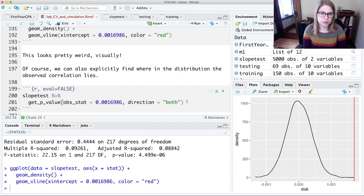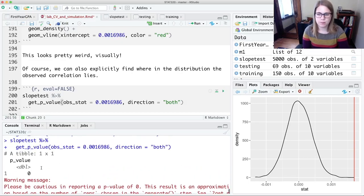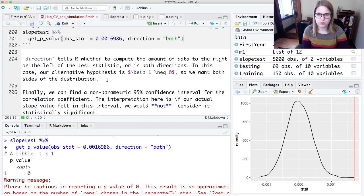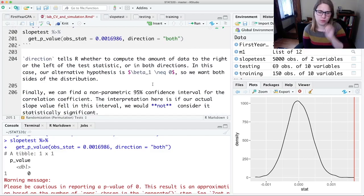So when you have the not equal in the alternative, you do a both-sided, a two-sided test, two-tailed. So my p-value is basically 0. So again, I would reject my null hypothesis.